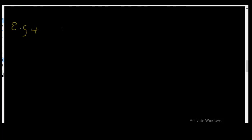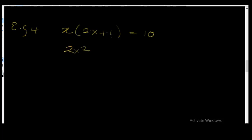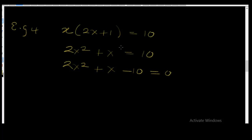Example 4: Factorize x(2x + 1) = 10. The first thing you do is multiply the bracket out. x times 2x gives 2x²; x times +1 gives +x. So we have 2x² + x = 10. Now let's bring this equation to zero: 2x² + x - 10 = 0. We moved the 10 from the right-hand side to the left-hand side, changing its sign.